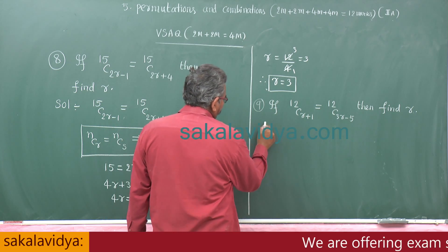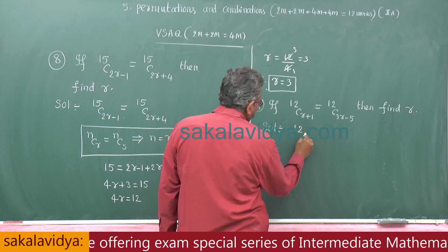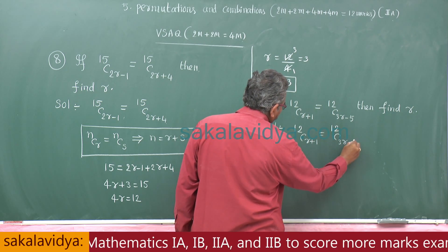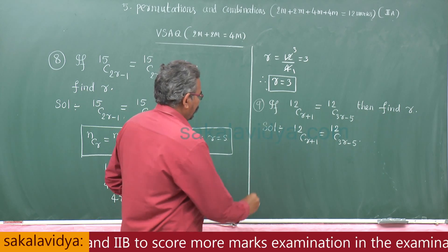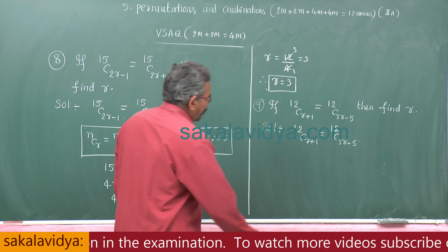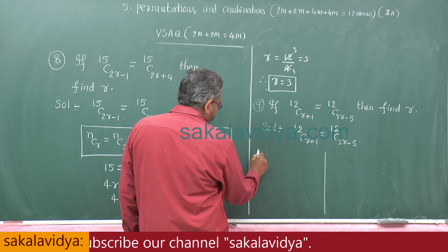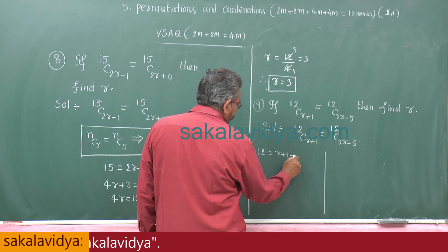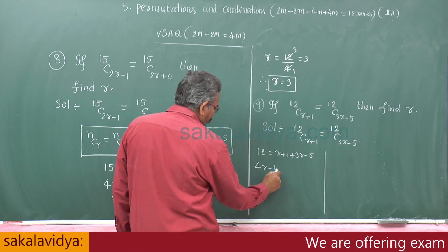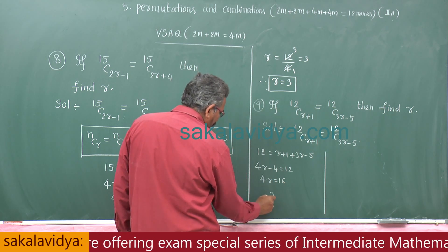Given: 12C(r+1) equals 12C(3r-5). Applying the same formula, Case 1: 12 equals (r+1) plus (3r-5). That means 4r minus 4 equals 12, so 4r equals 16, giving r equals 4.